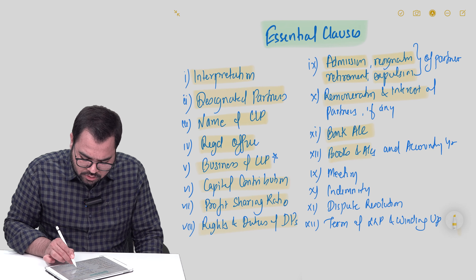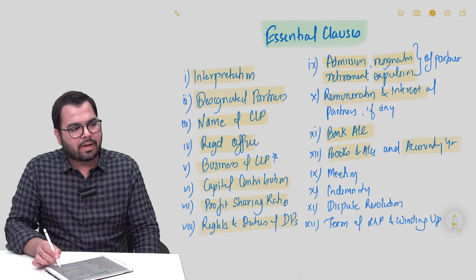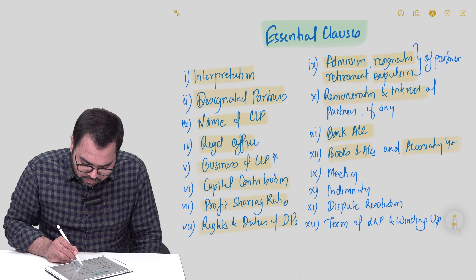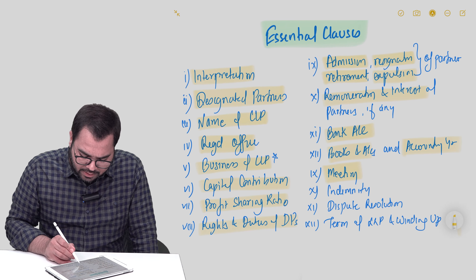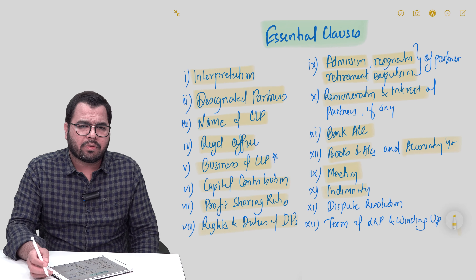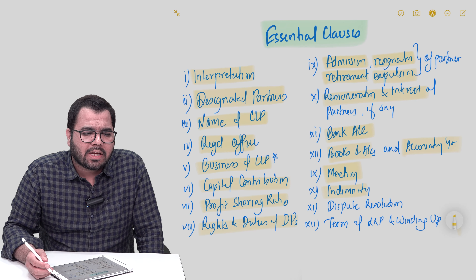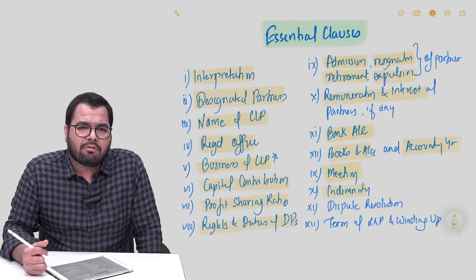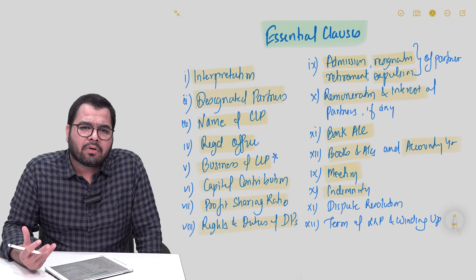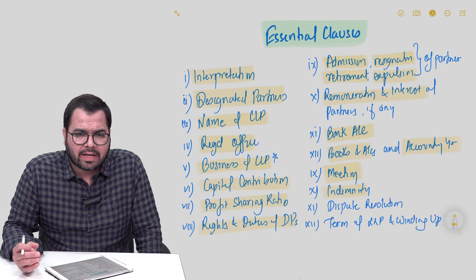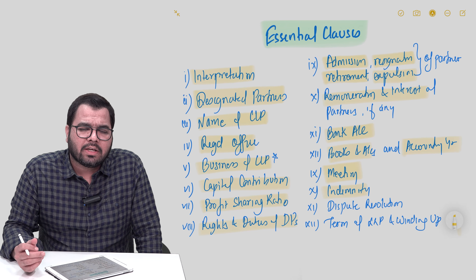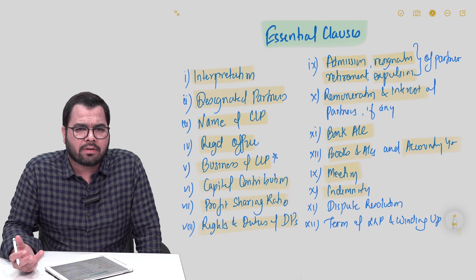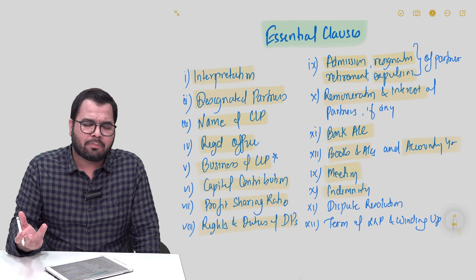Then, books and accounts, accounting year, and how to conduct LLP meetings must be determined. You also have to address indemnity. The good thing in an LLP agreement is that one partner is not liable for the act of another partner. So you can have many clauses here because in LLPs there is scope to define liability for each partner specifically. If any partner suffers a loss due to another's actions, that can also be addressed.